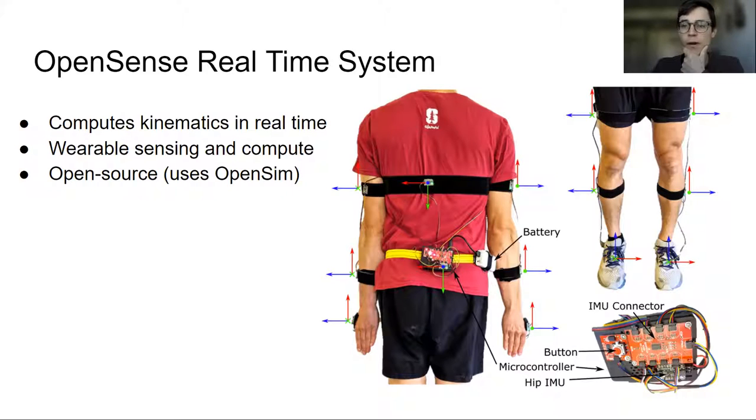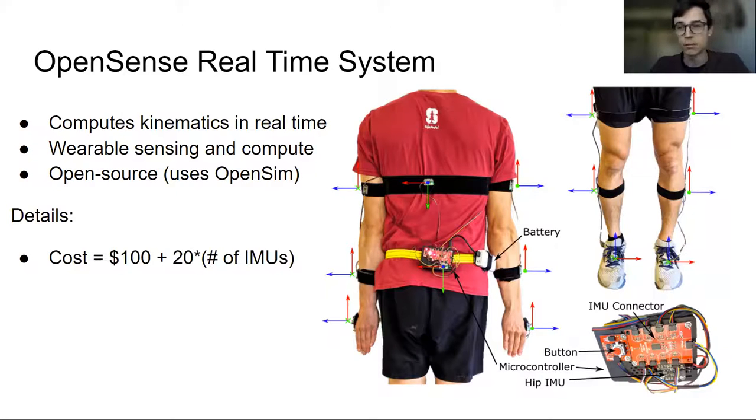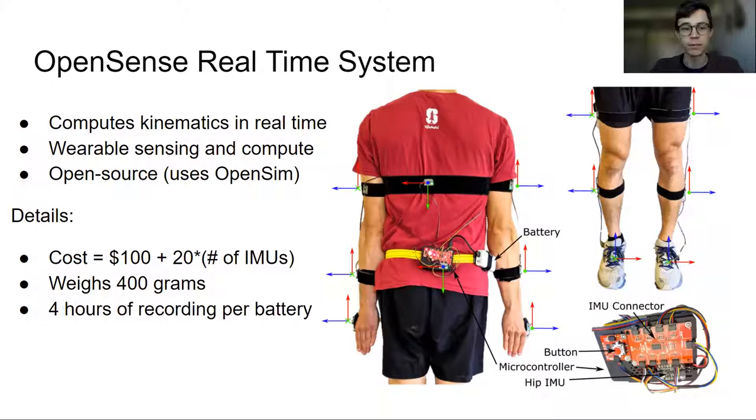Some fun facts about why you might want to try it. The system costs about $100 for the base components and then $20 for each additional IMU, so each additional body segment you want to track. It weighs 400 grams. Most of this is rechargeable battery, and it provides about four hours of recording per battery. If you want to record all day, just swap out the batteries.